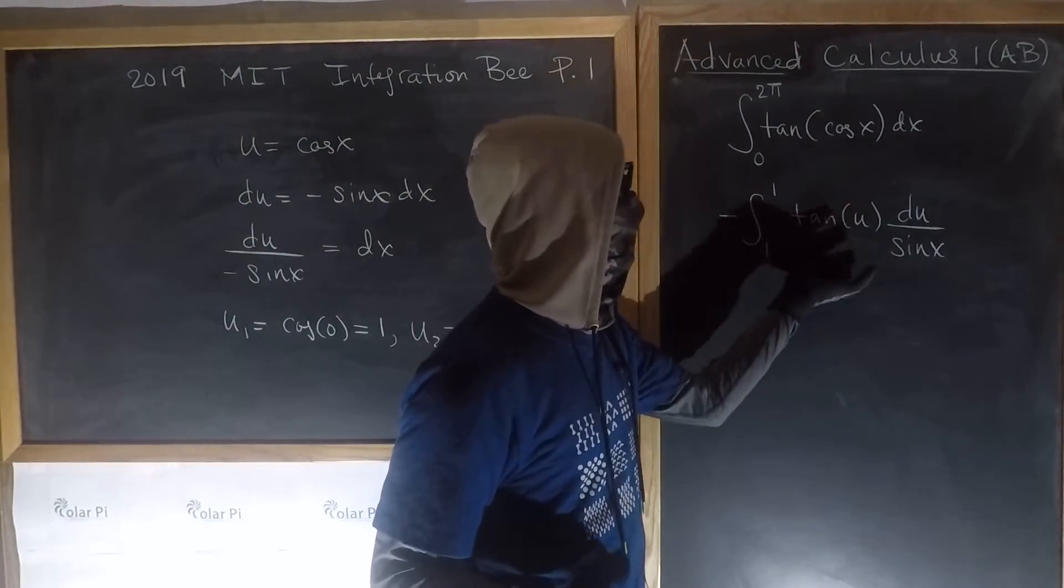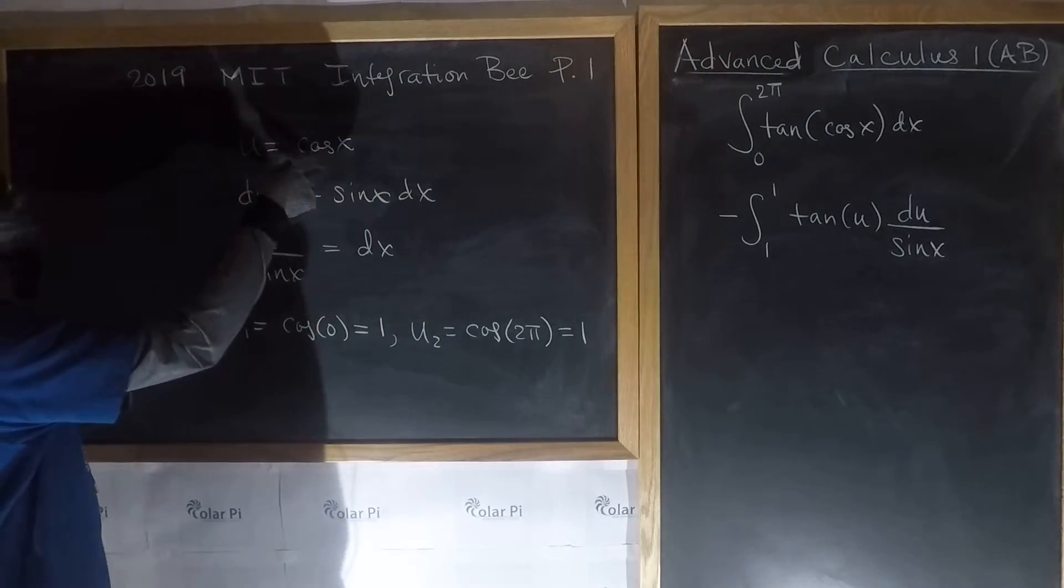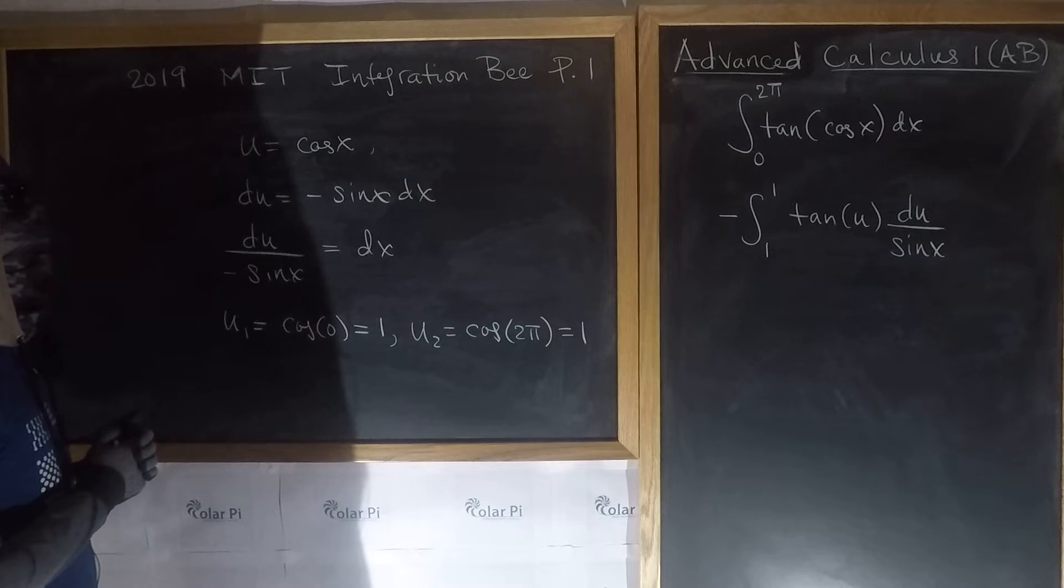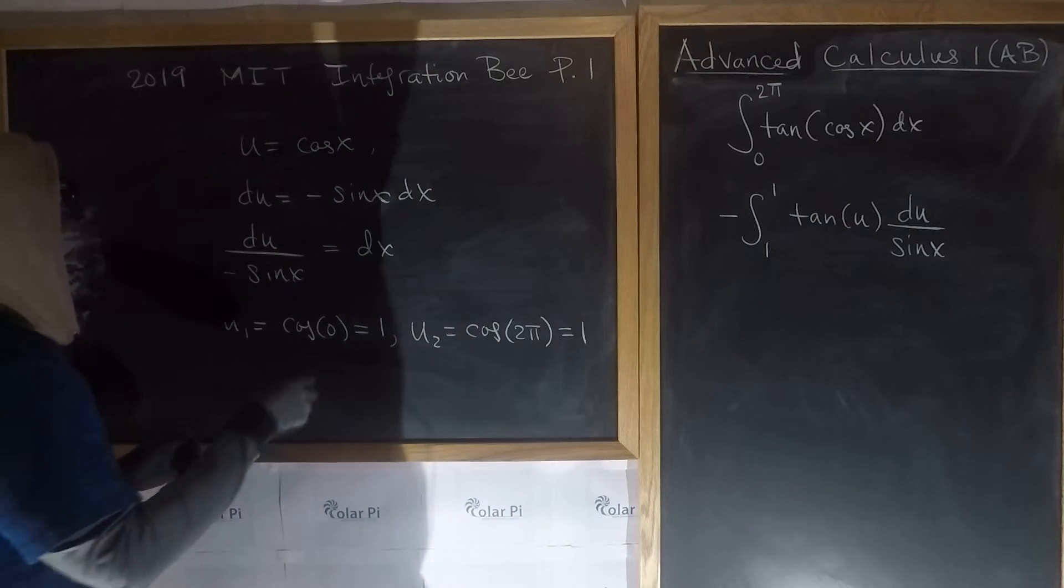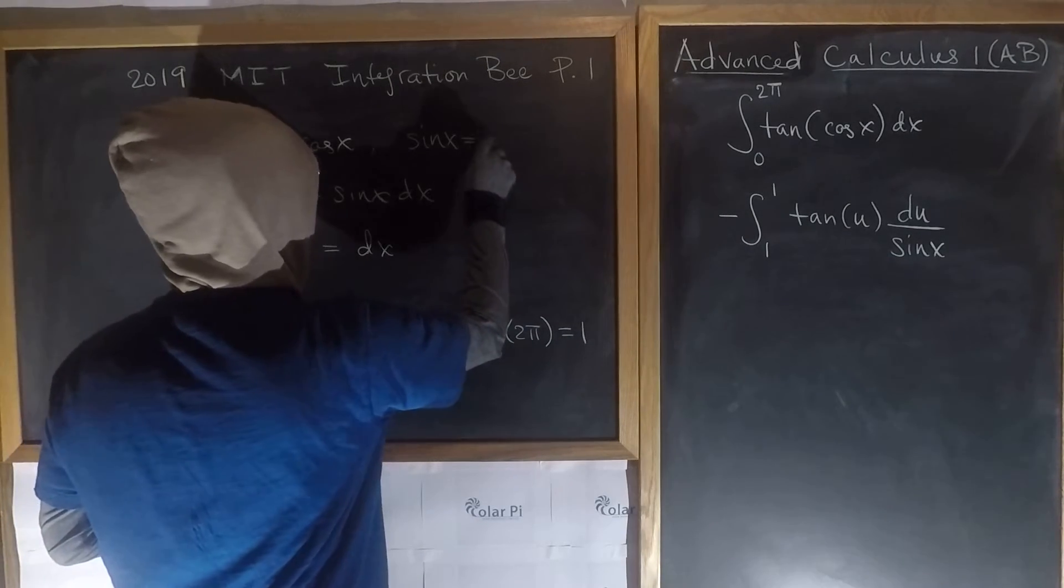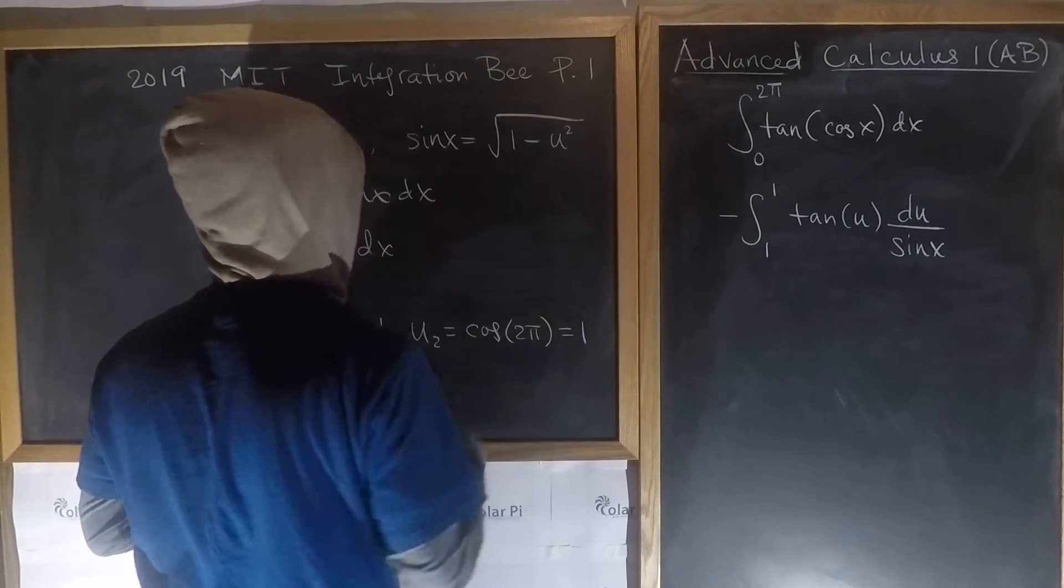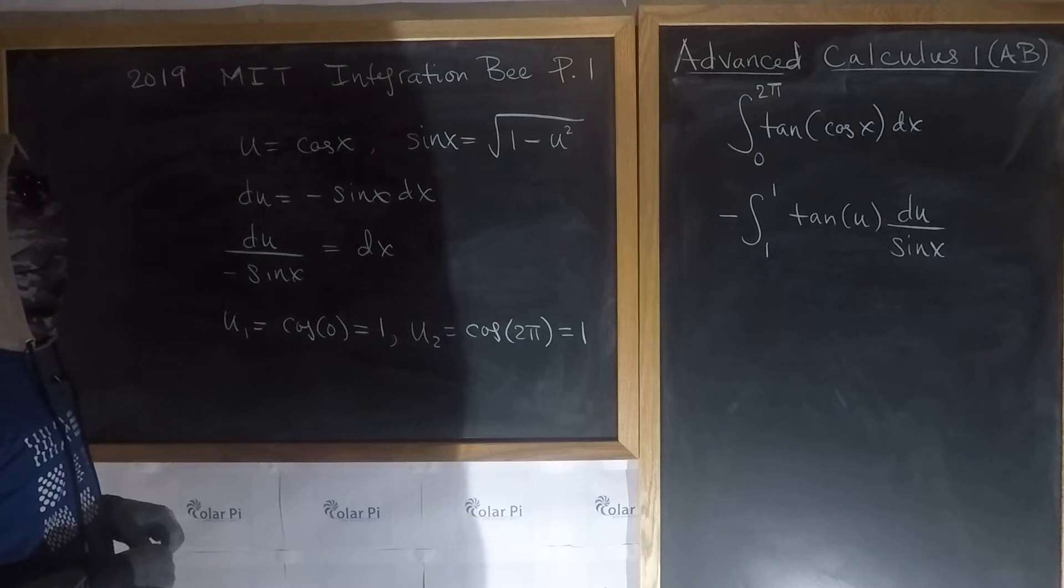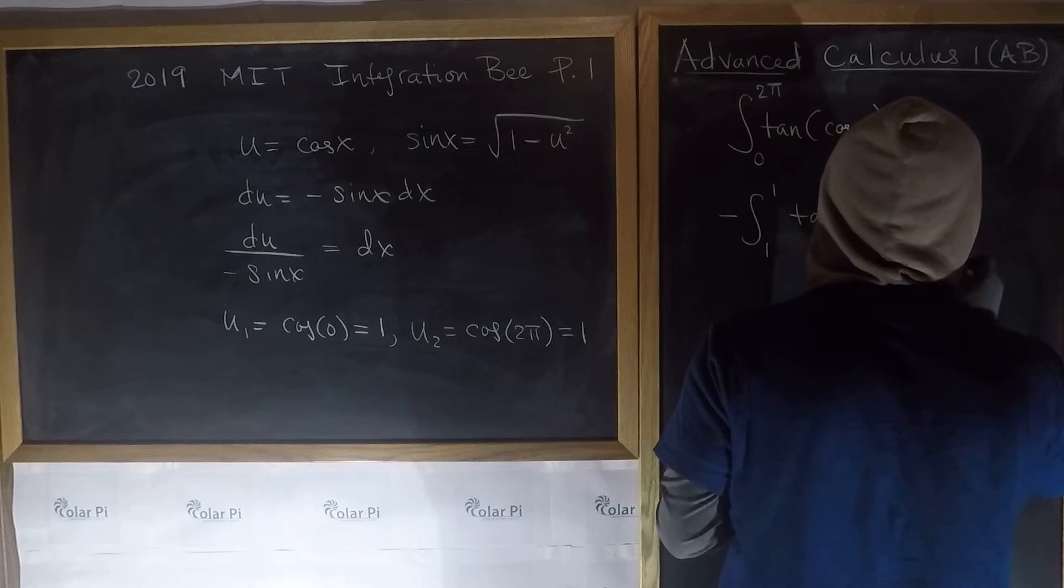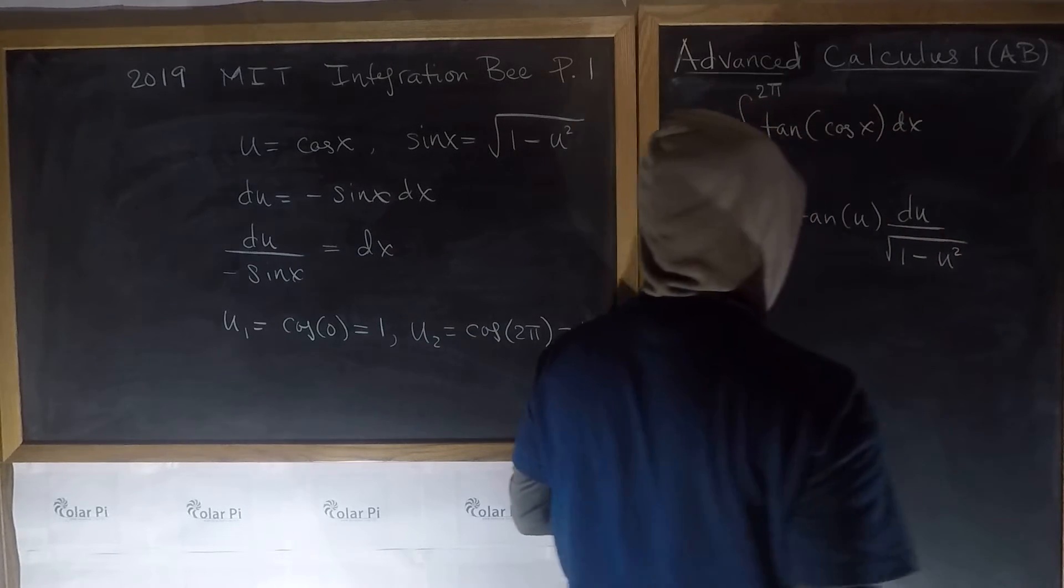Since we have to make this integrand all about u, and since u is cos x, we know that sine x is equal to the square root of 1 minus cosine squared. So sine x is going to equal the square root of 1 minus cosine squared, so 1 minus u squared under the square root, that's sine x. So I come here and I replace this with the square root of 1 minus u squared.